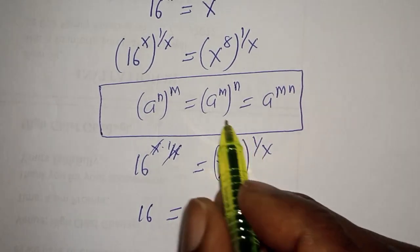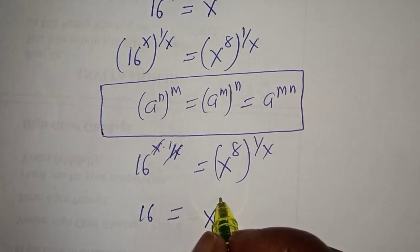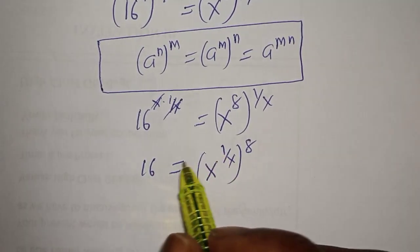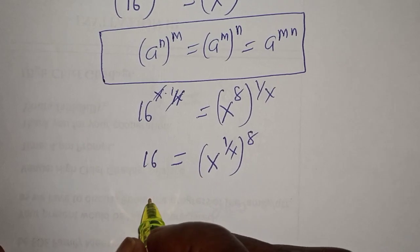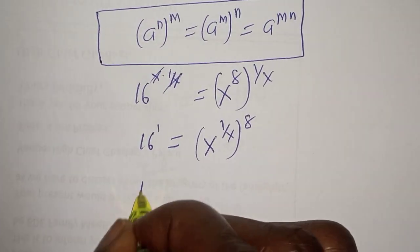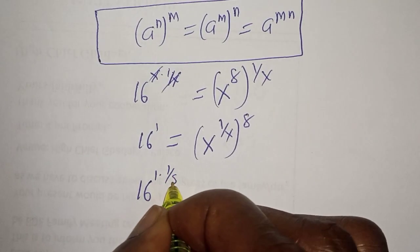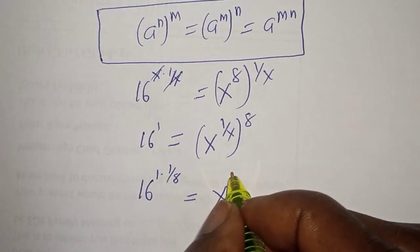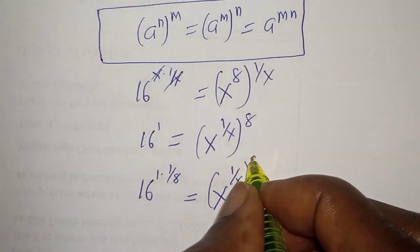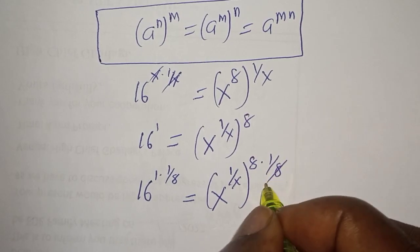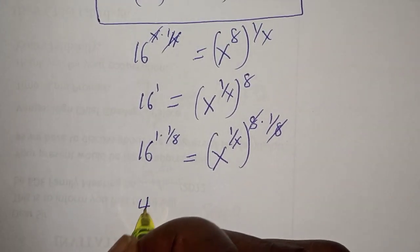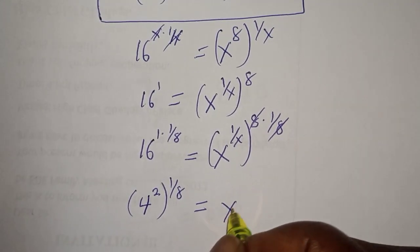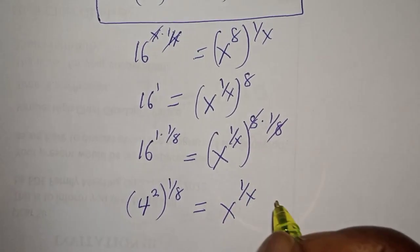16 will be equal to — from this rule, if you have a raised to power n to the power of m, this equals a raised to power m times n. So this can be written as s raised to power 1 over s, to the power of 8. Then, let's multiply the exponent of both sides again by 1 over 8. We have 16 raised to power 1 multiplied by 1 over 8. This can be written as 4 squared to the power of 1 over 8, is equal to s raised to power 1 over s.